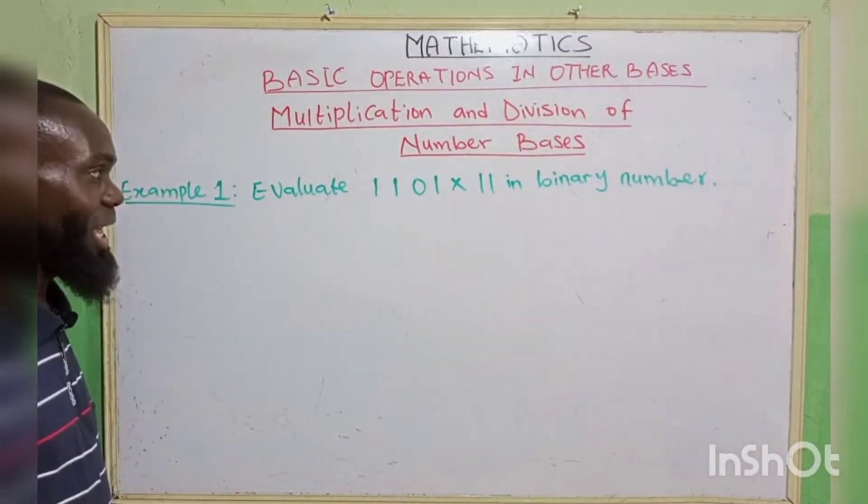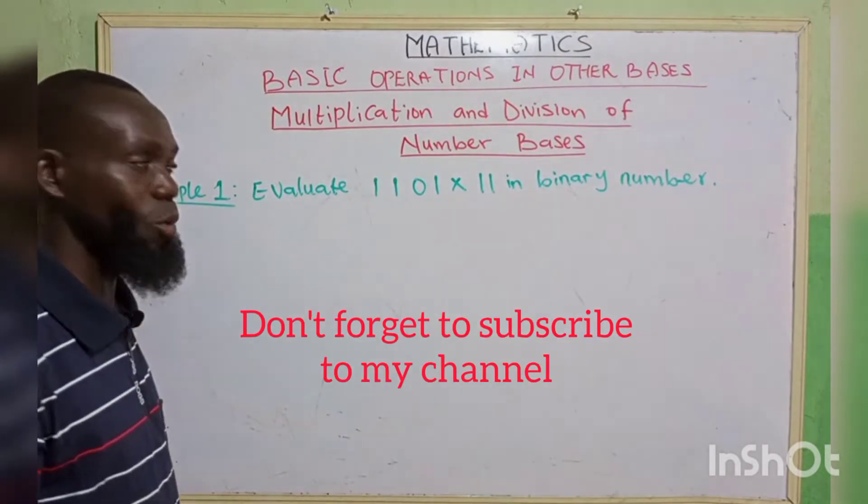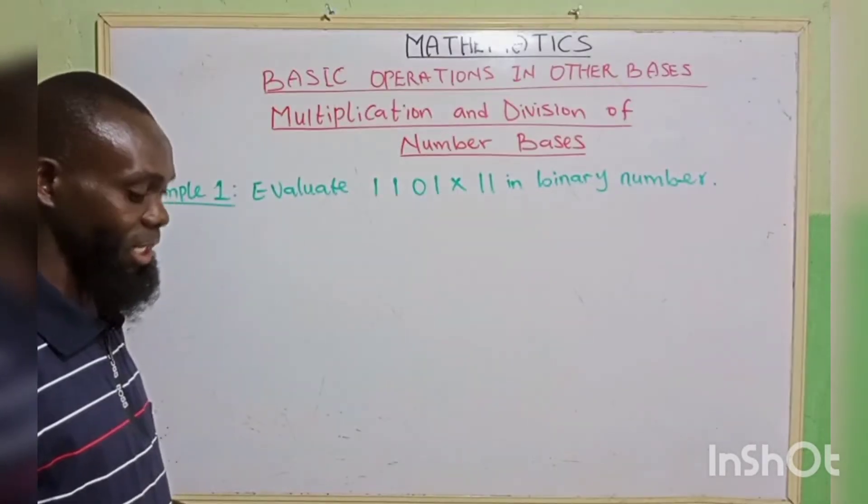Now, example one: evaluate 1101 multiply by 11 in binary number.